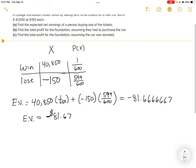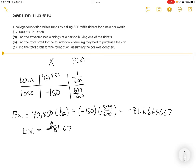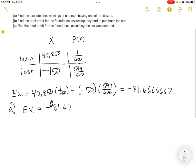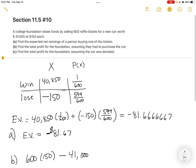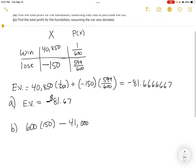The next two questions are actually pretty easy. Part B says find the total profit for the foundation, assuming they purchased the car. Well, they're selling 600 raffle tickets at $150 each, but they have to pay for the car. So 600 times 150 minus $41,000 equals $49,000 in profit if they had to pay for the car.